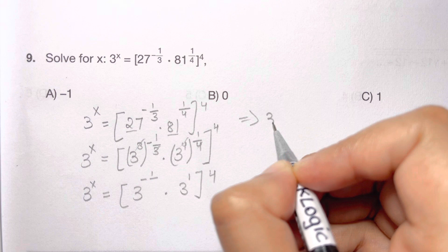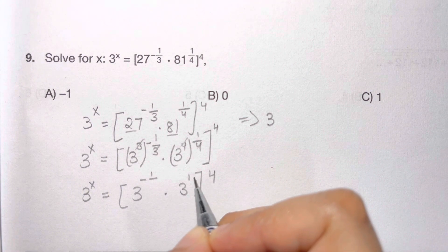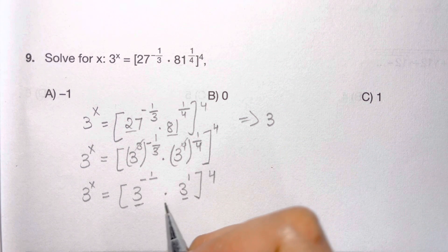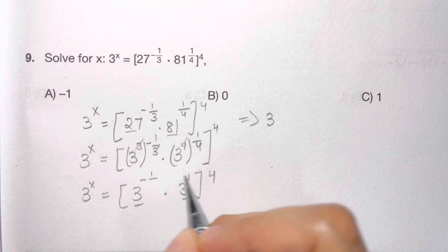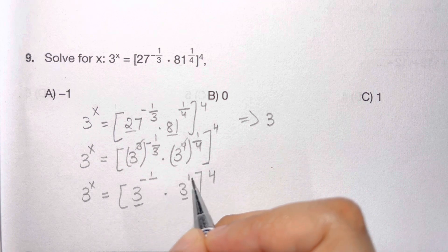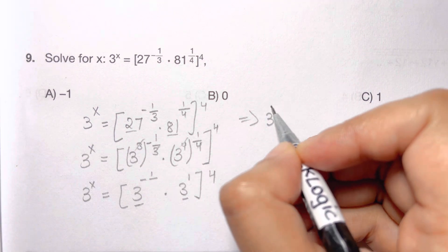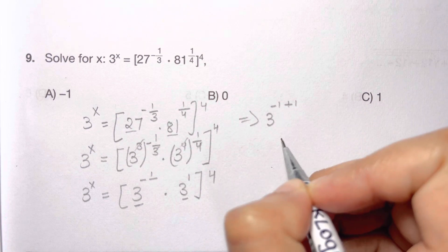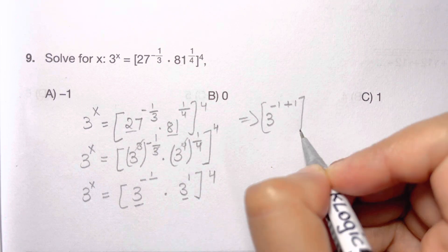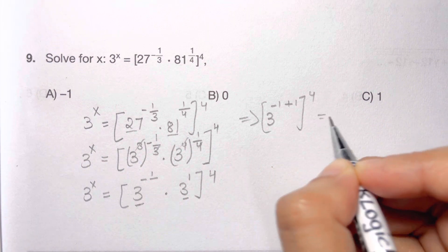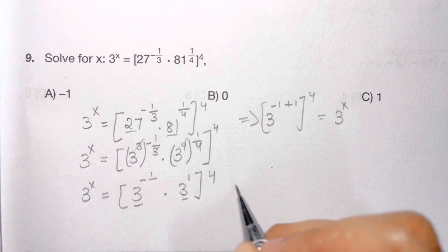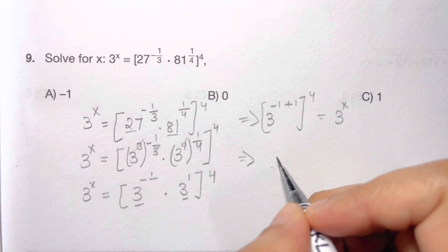You have the same base and there's multiplication between them, so what do you do with the powers? You add the powers. 3 to the power of minus 1 plus 1, whole to the power of 4, is equal to 3 to the power of x. Now let me write that down.